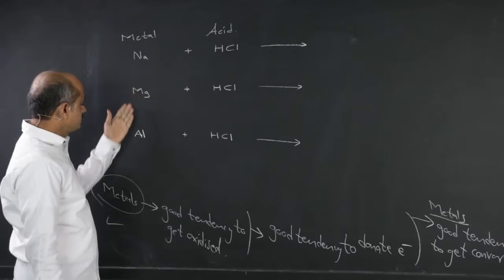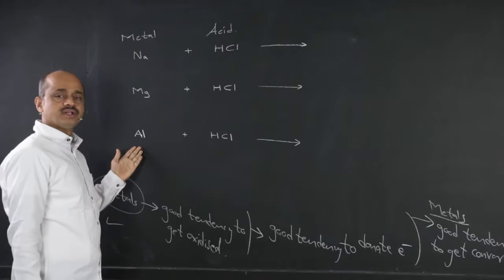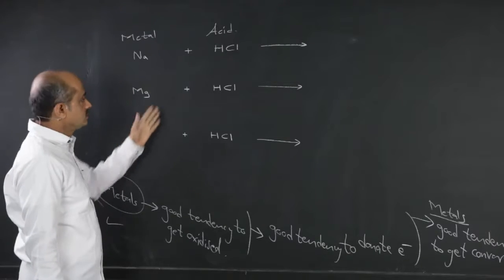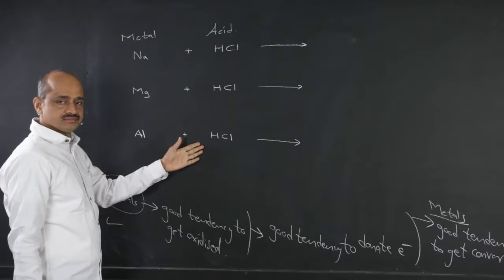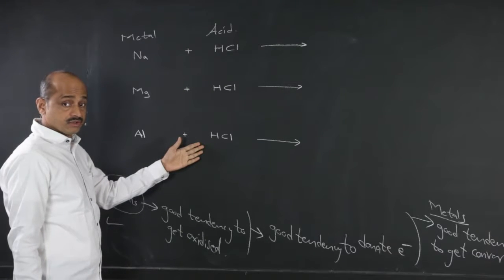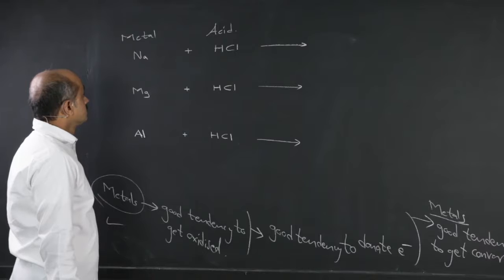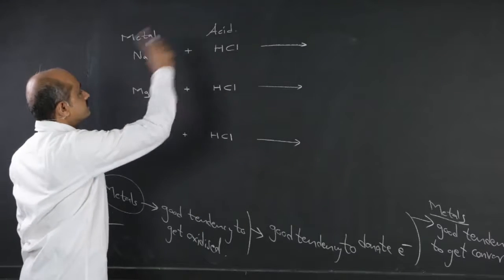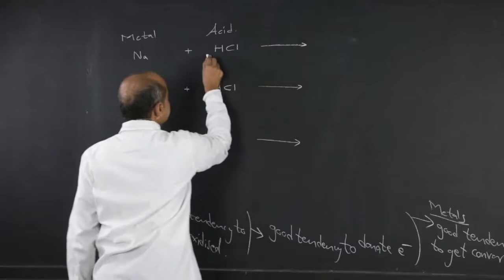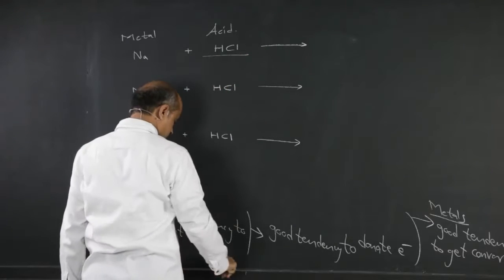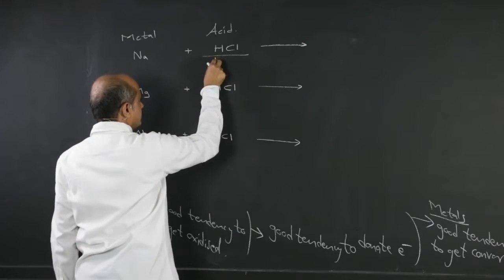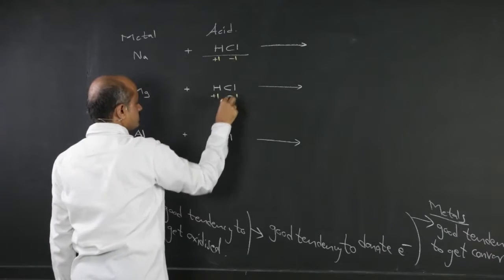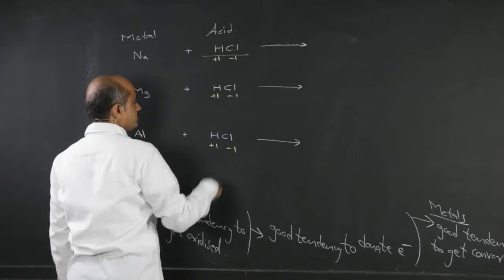Sodium, magnesium, and aluminium are examples of metals. When reacted with acid — it can be any acid — in HCl, hydrogen carries a plus 1 charge and chlorine carries minus 1. This charge distribution is fixed.